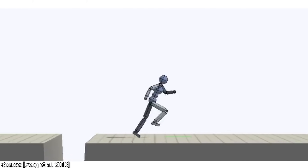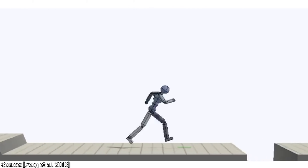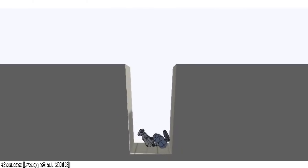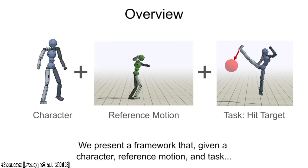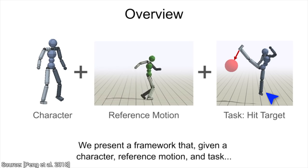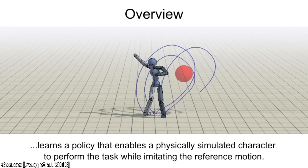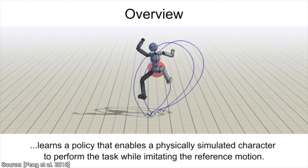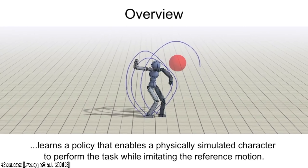This work zooms in on reproducing reference motions, but with a twist, and adds lots of additional features. We are given a virtual character, a reference motion that we wish to teach it, and additionally, a task that needs to be done. When the reference motion is specified, we place our AI into a physics simulation, where it tries to reproduce these motions.